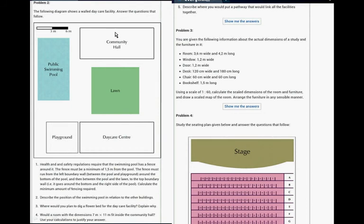Problem Number 2: The following is a walled daycare facility. The Orphans' Safety Regulations state that the swimming pool has a fence around it. The fence must be a minimum of 1.5 meters from the pool. The fence must run from the left boundary wall between the pool and the playground, around the bottom of the pool, and then between the pool and the lawn to the top boundary wall. Calculate the minimum amount of fencing required.